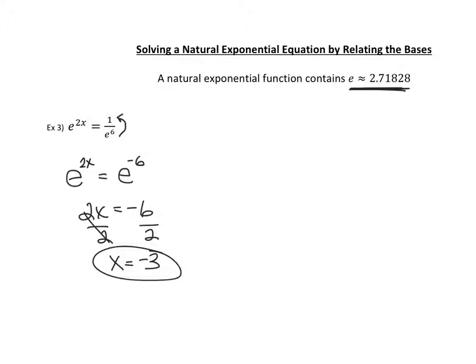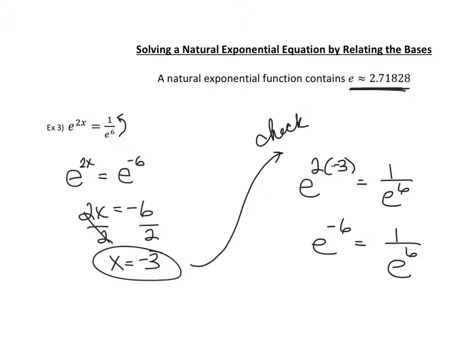We can always check if we'd like to. You can do that by plugging our negative 3 into the original problem. If we do that, we have e to the 2 times negative 3 equals 1 over e to the 6, which gives us e to the negative 6 equals 1 over e to the 6. We've already discussed the fact that you can bring e to the top and make it e to the negative 6. That proves that these two sides are equal, so we know we have the correct answer.